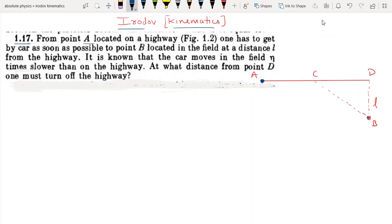From point A located on a highway, one has to get by car as soon as possible to point B, located in the field at distance L. This person has to go from point A to point B in minimum time as possible.